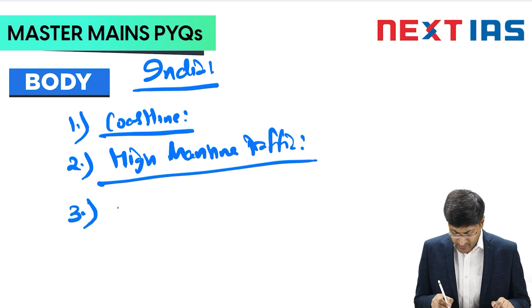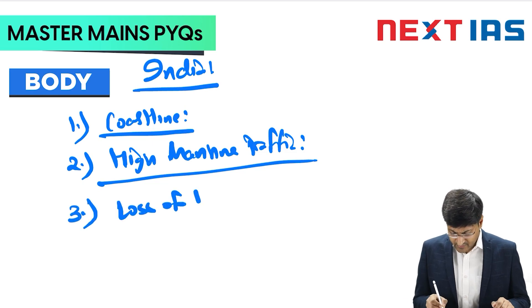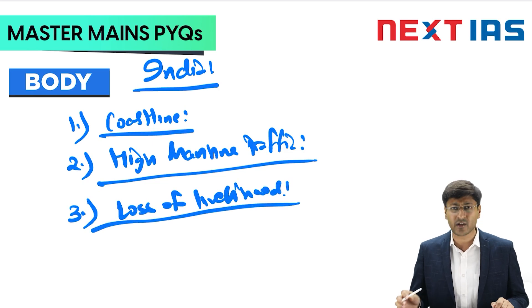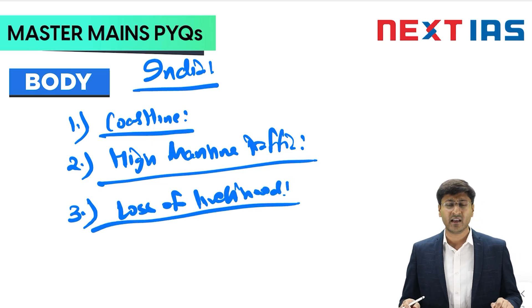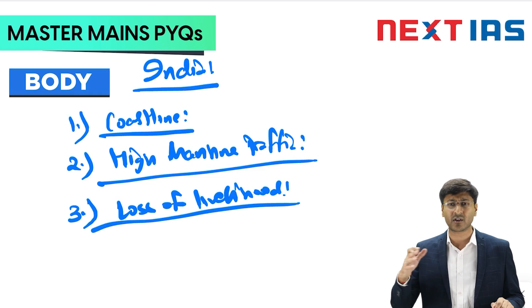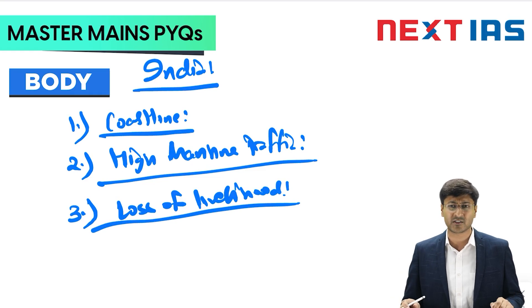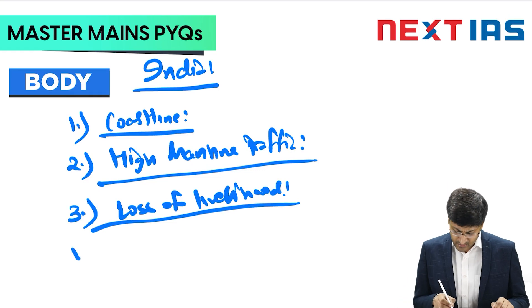Third is the loss of livelihood. As seen in the 2017 Chennai oil spill, the fishing communities living along the coast are badly affected whenever an oil spill occurs.